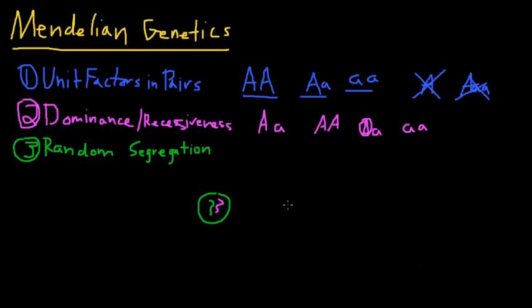So let's say I have a parent that has this genotype, big A, little a. That's saying that one of its chromosomes has the big A allele, and the other chromosome has the little a allele.